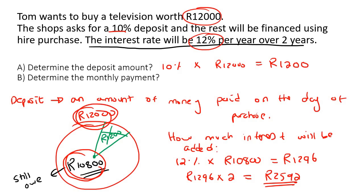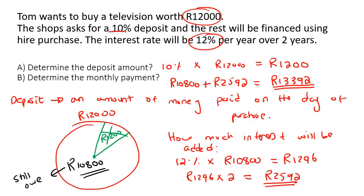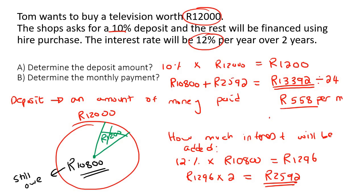They're going to put the interest on top of the amount of money that you haven't paid. So then we say 10,800 plus 2,592, which gives 13,392 rand. That is how much money you are going to have to pay back the shop in two years. How many months do we have in two years? 24 months. So you divide 13,392 by 24 and that'll be 558 rand — that is what you are going to pay per month.